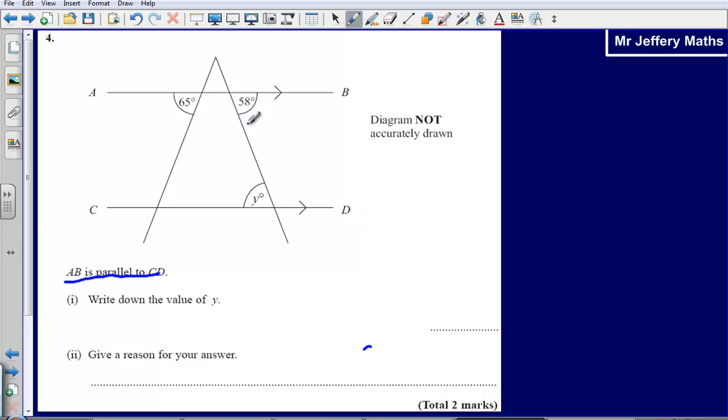When we are dealing with parallel lines we know lots of facts about them and I can say right now that the value of y is going to be 58 degrees, and the reason for that is because y is alternate to the angle of 58, so it is an alternate angle.